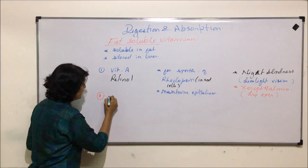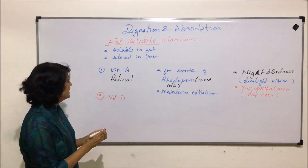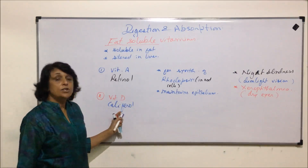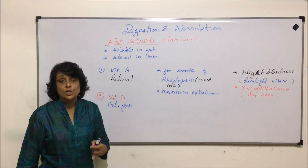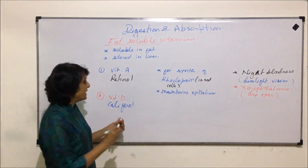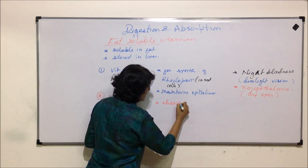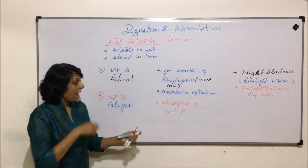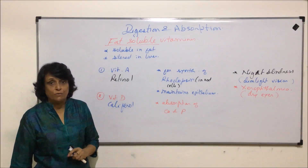The next fat-soluble vitamin is vitamin D. Its scientific or technical name is calciferol. The function of vitamin D is that it helps in the absorption of calcium and phosphates from digested food present in the intestine. Both calcium and phosphates are required for bone and teeth formation.